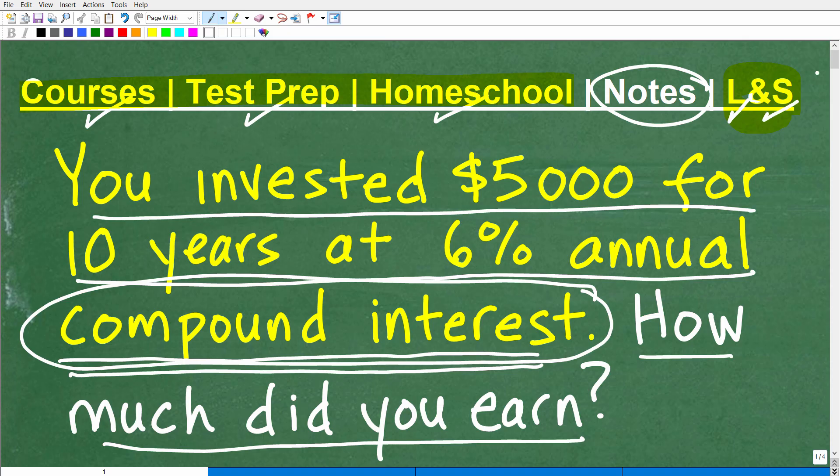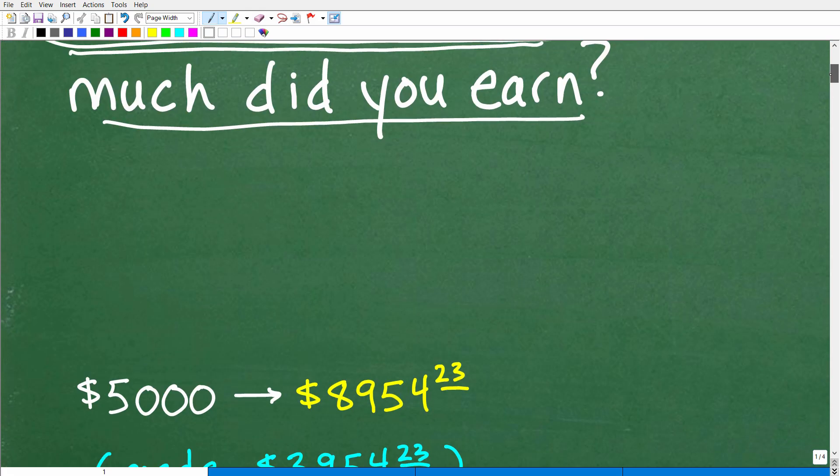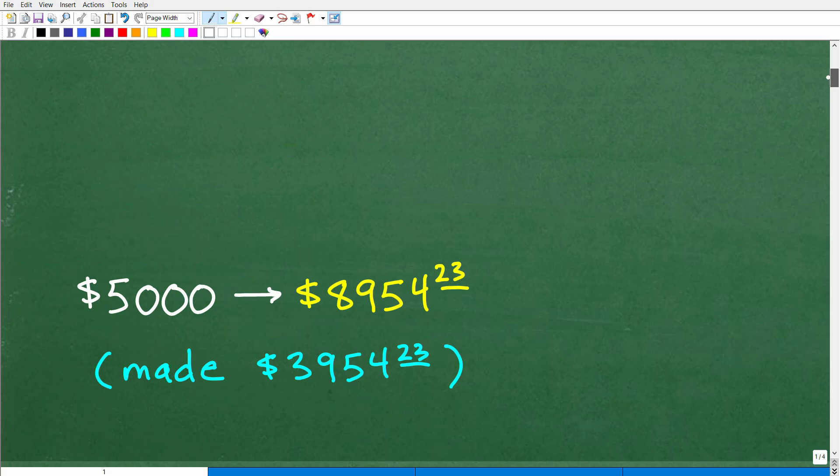So let's go ahead and take a look at the answer to this problem. If you invested $5,000 for 10 years at 6% annual compound interest, how much money did you earn on that investment?